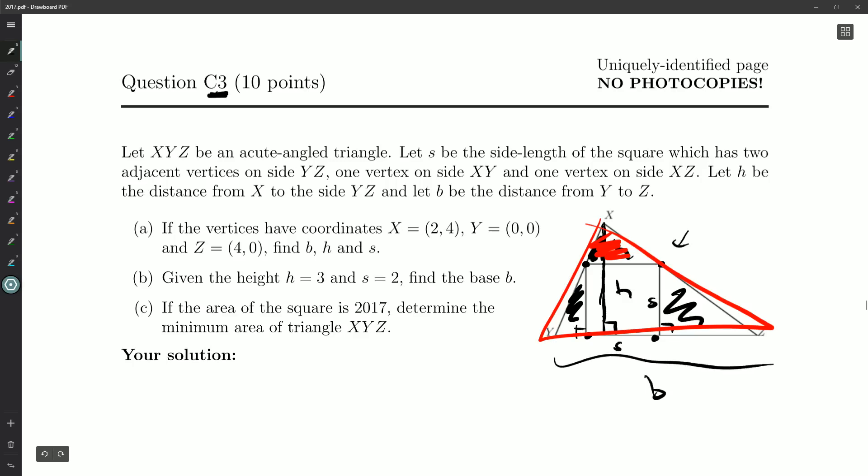So we've got three parts to the question. Part a: If the vertices have coordinates X = (2,4), Y = (0,0) and Z = (4,0), find b, h, and s.